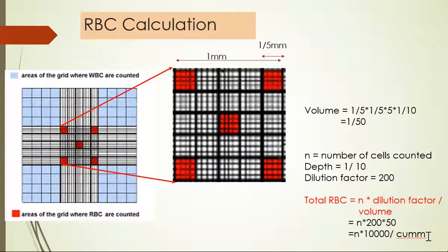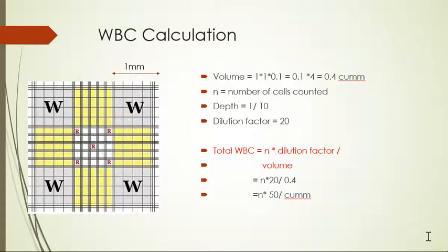Coming to WBC calculation, the corner squares are for WBC. This one square length and breadth both are 1mm. The volume is 1 x 1, depth is 1/10 which is 0.1. The volume of one big square is 0.1, and we calculate in four big squares, so 0.1 x 4 equals 0.4.